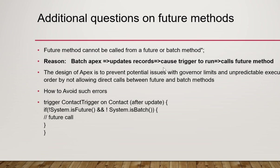So how do you avoid this error? The batch is updating some records and then the trigger is running. To avoid such errors, in your trigger you need to check whether the update is coming from a future method or a batch method. You can use System.isFuture() or System.isBatch() — similar to trigger context variables — to check if the trigger was called by a future method or a batch method.